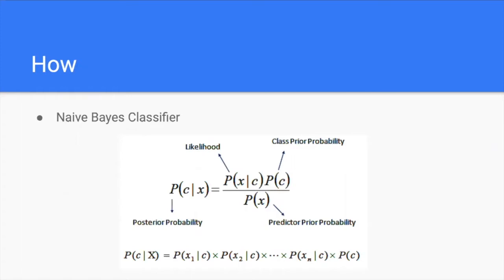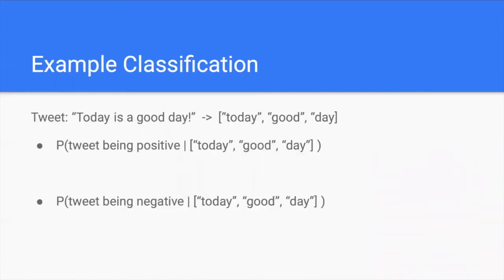I always think it's easier to explain the concept with an example. If the tweet given is 'today is a good day', the first thing we will have to do is pre-process the tweet. The processed tweet will contain the words today, good, and day.